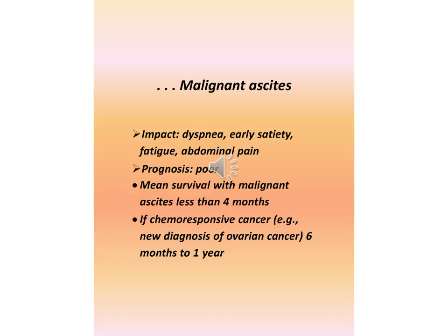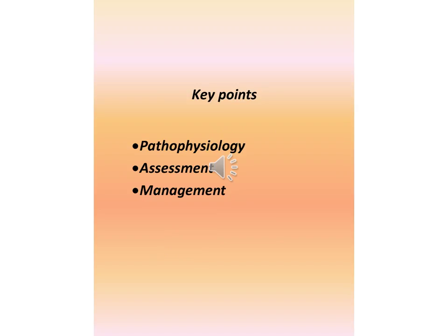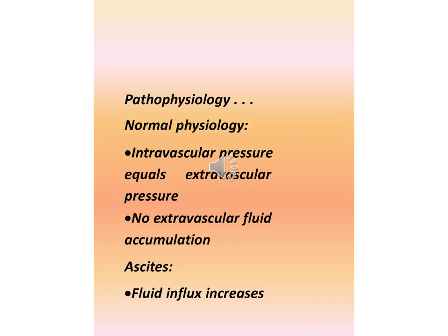Malignant ascites impact: symptoms include dyspnea, early satiety, fatigue, and abdominal pain. Prognosis is poor — mean survival with malignant ascites is less than 4 months, except in chemo-responsive cancers such as new diagnosis of ovarian cancer, where survival may be 6 months to 1 year.